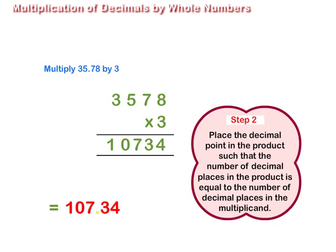Step 2: Place the decimal point in the product such that the number of decimal places in the product is equal to the number of decimal places in the multiplicand.